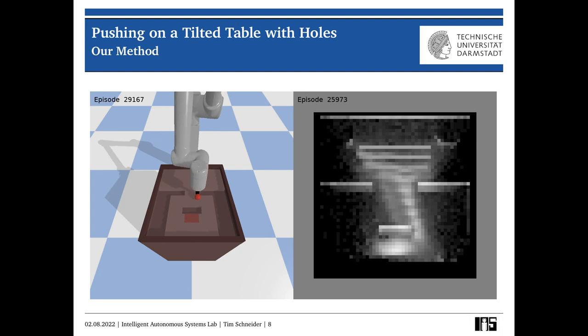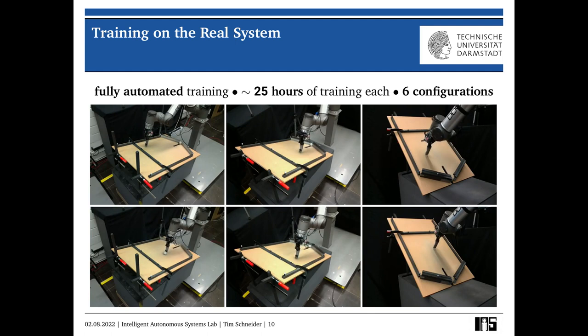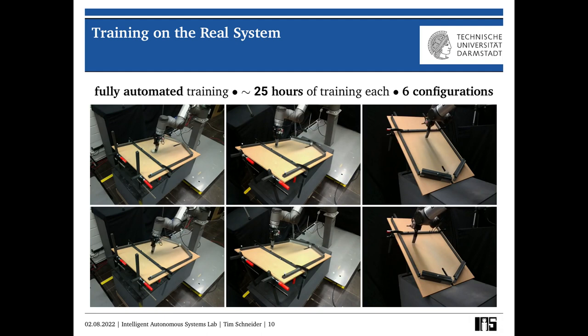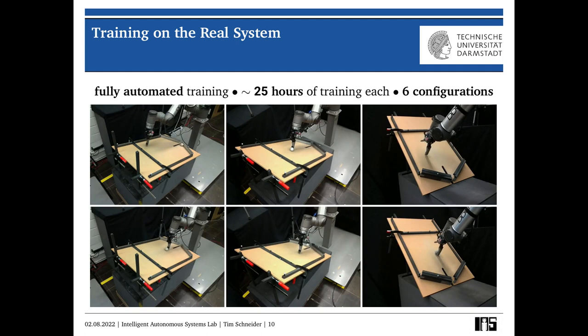And in the end, we obtain a model that we can use fairly robustly in order to move this ball up into this target zone. And finally, we also conducted an extensive study of our method on the real system. So what you can see here are six different configurations, including three different table inclinations for the same task you saw before. And we train our method here from scratch on the real system. That means there's no transfer learning going on and also no pre-training in simulation. And our method manages to solve this task in five out of these six configurations.